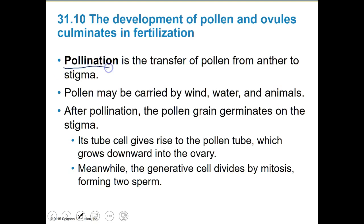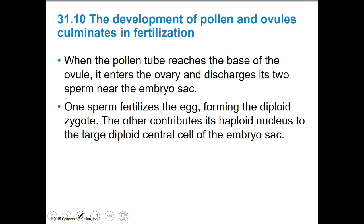Pollination is the transfer of pollen from one anther to the stigma. Pollen can be carried by wind, water, or animals. After pollination, the pollen grain germinates on the stigma. Its tube cells give rise to a pollen tube, which grows downward into the ovary. Meanwhile, the generative cell divides by mitosis forming two sperm — that's where we get the double fertilization. When the pollen tube reaches the base of the ovule, it enters the ovary and discharges its two sperm near the embryo sac. One sperm fertilizes the egg, developing into a diploid zygote.